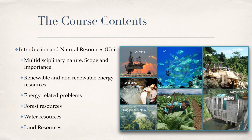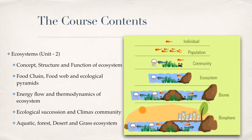The course is divided into six units. Unit 1 covers introduction and natural resources, including energy-related problems, forest resources, water resources, and land resources. Unit 2 covers ecosystems, including food diagrams, energy flow, food chains, food webs, ecological pyramids, and thermodynamics.